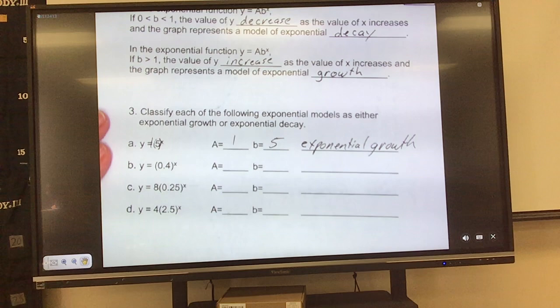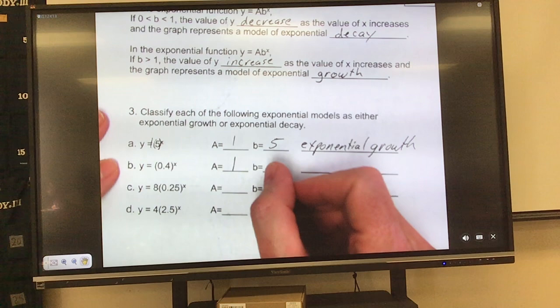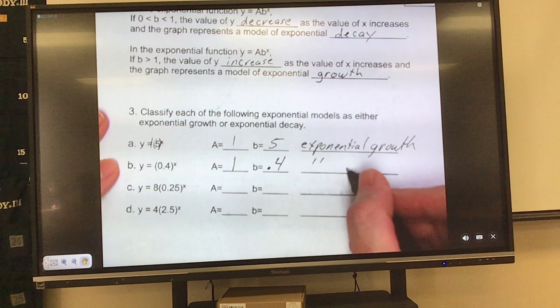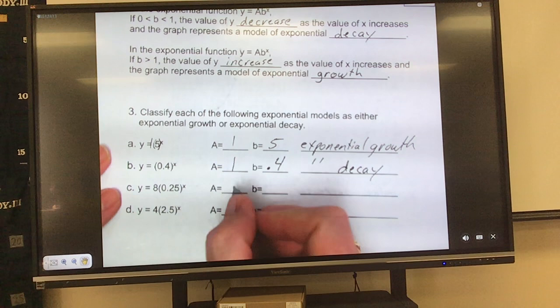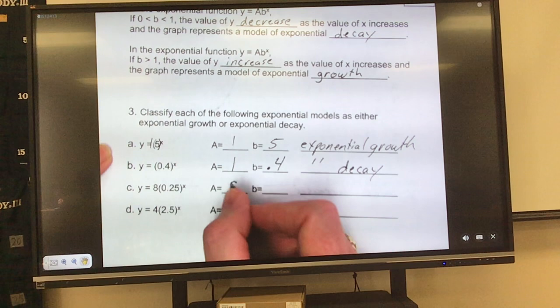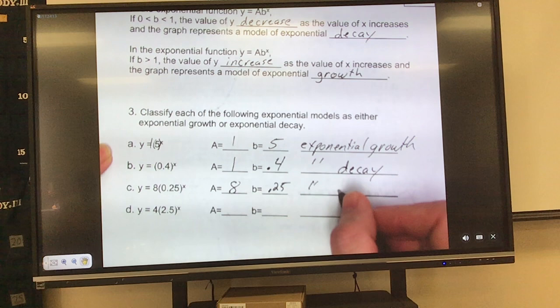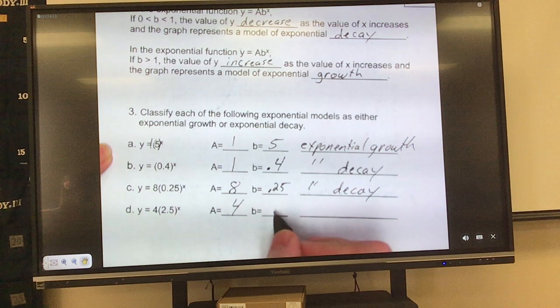What's my a value on this next one? 1. What's my b value? 0.4. That would be exponential decay. Next one. a value. The a value is what? 8. b value is 0.25. And exponential decay. And last one? 4 is my a. 2.5. So that's exponential growth. Don't get caught up. Someone earlier got caught up with it being a decimal, but it doesn't matter if it's a decimal. It's 2.5. That's greater than 1.